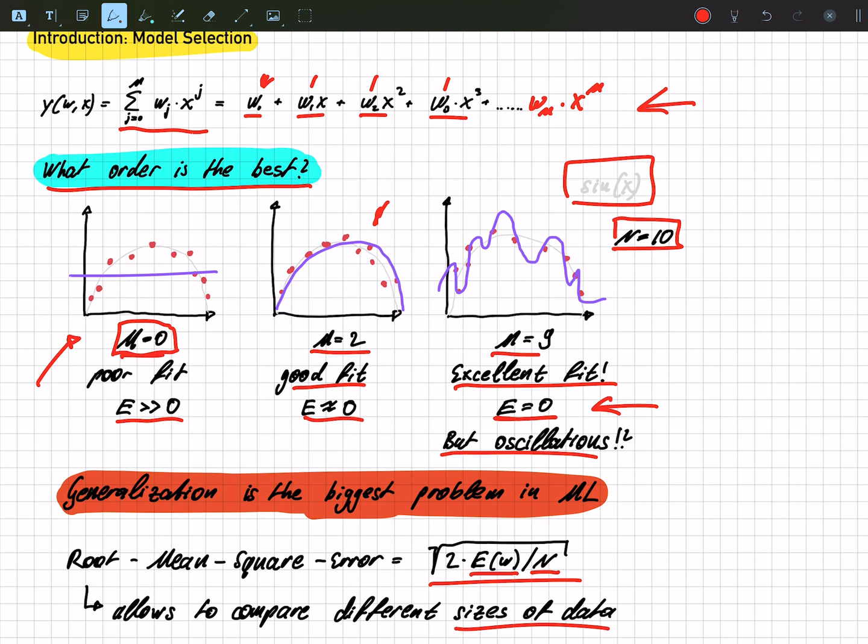We introduced a new error function so that we compare different models at different sizes of data. We saw that our root mean square error goes down to eventually zero, the bigger the polynomial gets.